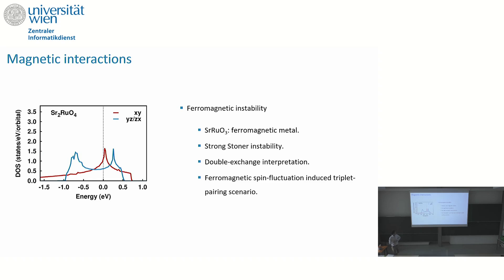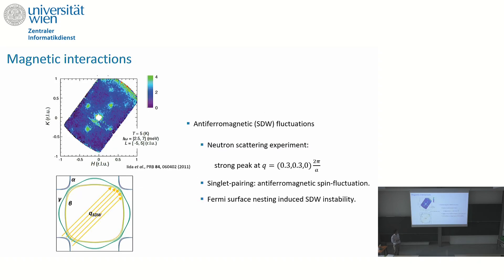If you look at the non-magnetic density of states, there is a peak very close to the Fermi energy, suggesting this system is close to ferromagnetic instability. This is also evidenced by the 113 companion system, which is in fact a ferromagnetic metal. This gives a strong Stoner-like instability, and as a metal this system has a double-exchange-like mechanism driving it toward ferromagnetism. Ferromagnetic spin fluctuations can thereby promote spin-triplet pairing scenarios.